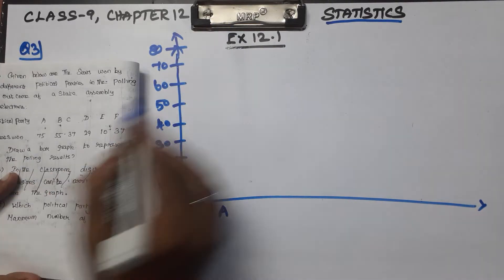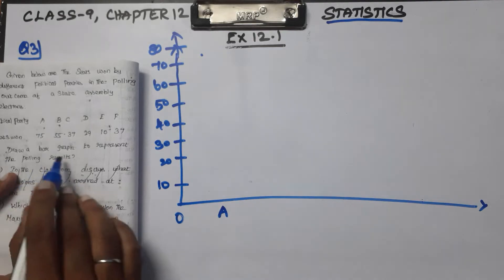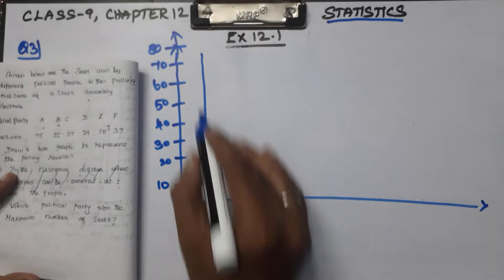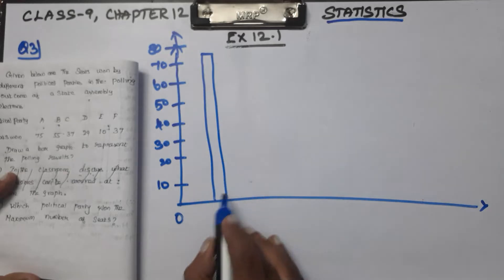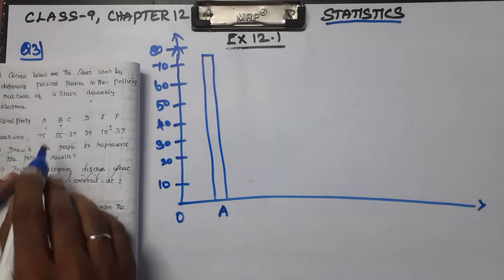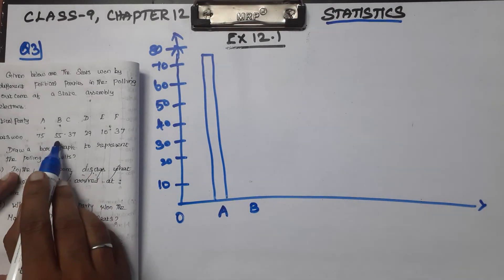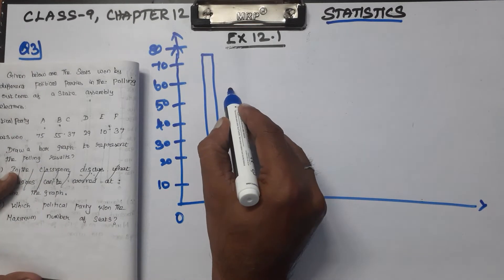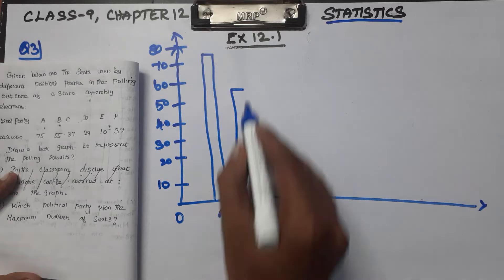Bar graph. Party A has 75 seats, so we draw a bar up to 75. Next, party B — B won 55 seats. Draw a bar up to 55. This is a bar graph.